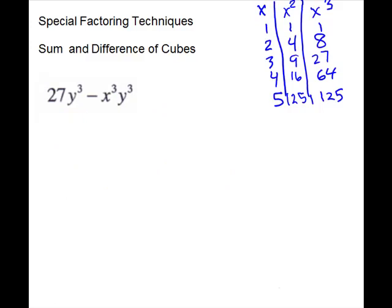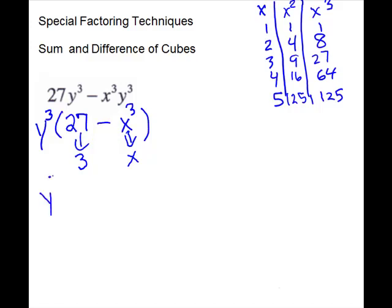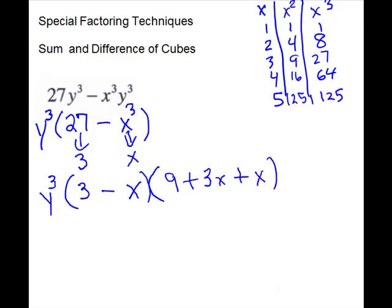For this problem we do have a GCF, and you really want to do that first — even though you could go with cubes, it will be messy if you do that first. So we'll go with a GCF: we have a y cubed in each one, so it can go to the outside. That will leave us 27 minus x cubed. Then we'll see — can we do cubes? We can. Cube root of 27 is 3, cube root of x cubed is x. We'll bring down our GCF, and then we'll use our pieces with the sign of the problem. Second set will be a trinomial. For our signs: the first sign will be the opposite. Last one is always plus. We'll take the first root times itself — 3 times 3 is 9. First root times the second one — 3 times x is 3x. Last root times itself — x times x is x squared.